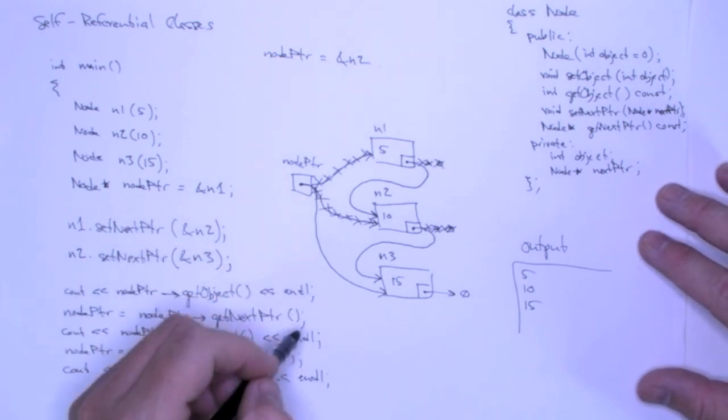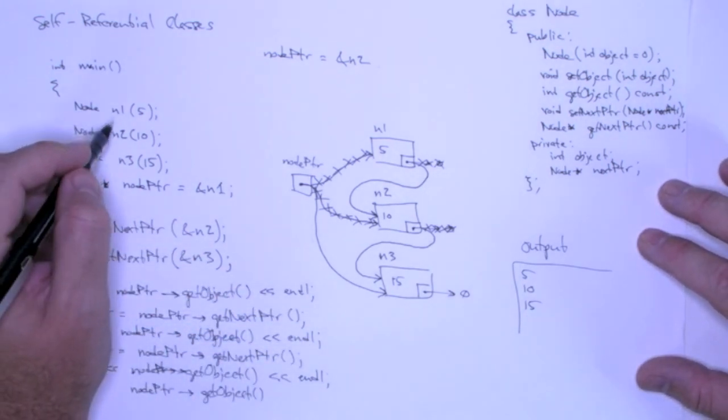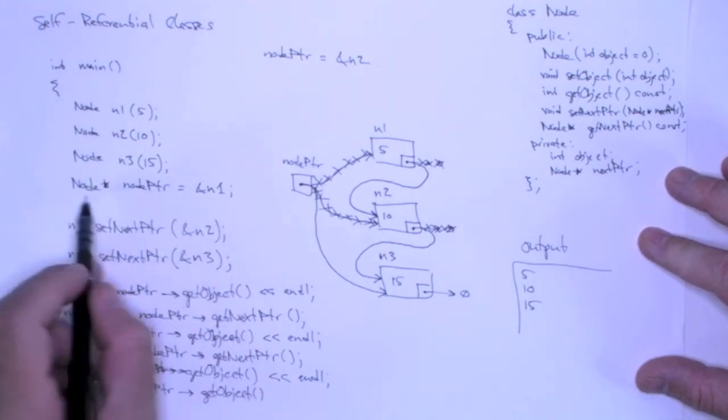So now we're going to do all of this using dynamic allocation. We'll get rid of n1, n2, and n3, and we'll just use pointers.